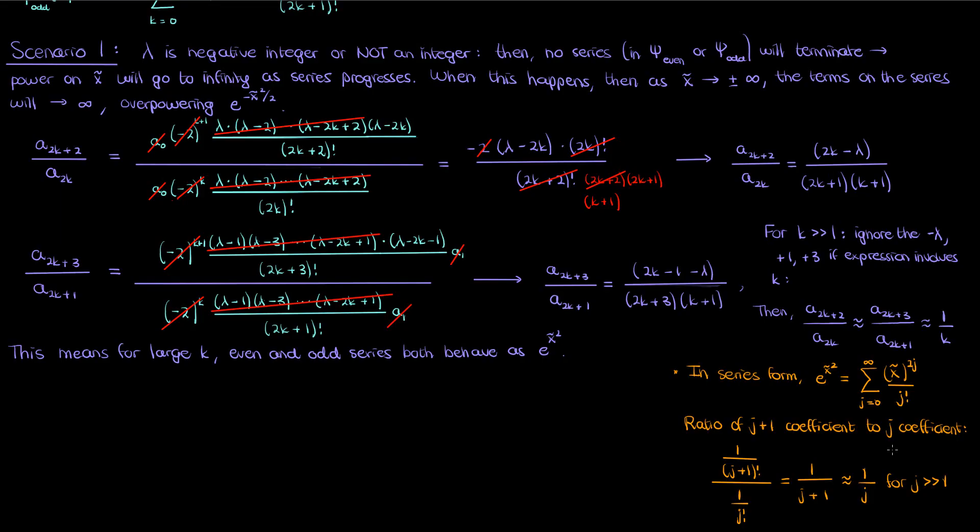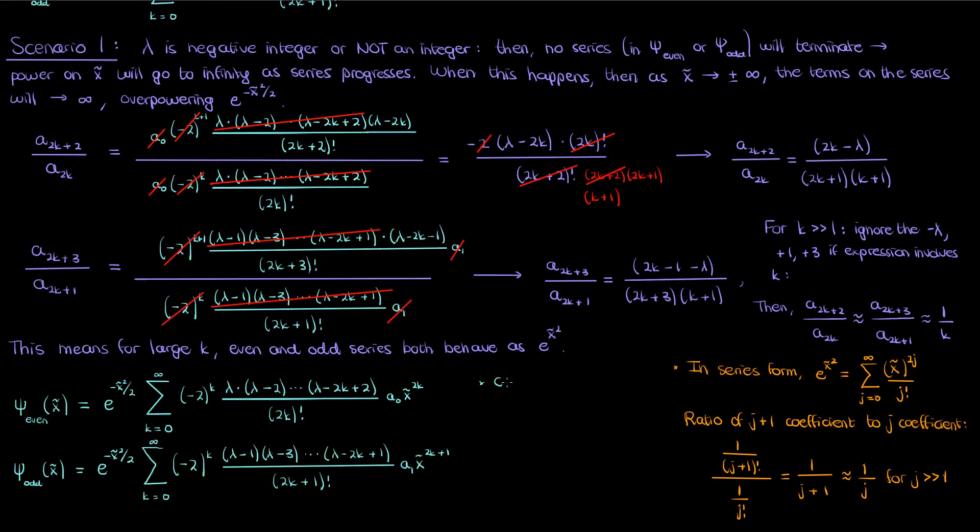But so is the ratio of successive coefficients in the even and odd series for ψ. As a result it's pretty reasonable to conclude that at really large values of the index, when you start looking at terms with a large power on the x tilde, it's reasonable to conclude that these non-terminating series behave similarly to e to the x tilde squared.